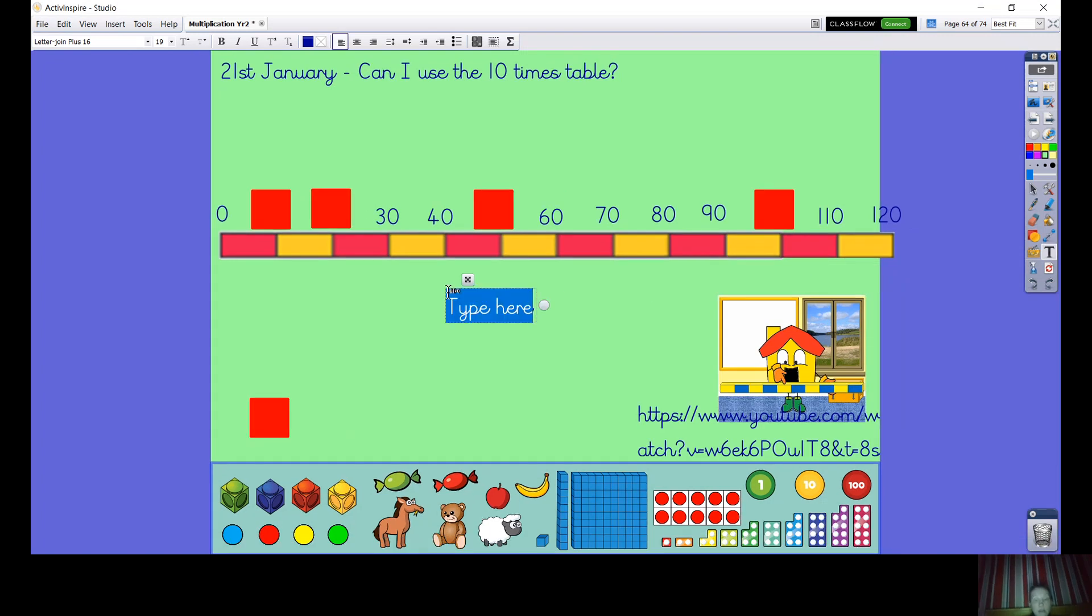Let's have a look at adding our times table sentence to it. Join in with me saying it: 0 times 10 is 0, 1 times 10 is 10, 2 times 10 is 20, 3 times 10 is 30, 4 times 10 is 40, 5 times 10 is 50, 6 times 10 is 60, 7 times 10 is 70, 8 times 10 is 80, 9 times 10 is 90, 10 times 10 is 100, 11 times 10 is 110, 12 times 10 is 120.